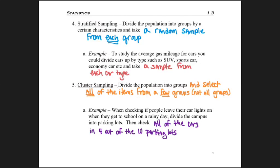What's nice here is you don't have to go to all ten parking lots, but hopefully you're still getting a pretty random sample. Whereas, if you had used cluster sampling to find gas mileage and just took all sports cars and all SUVs, it would give you the average gas mileage but just for those car types, which probably represent some of the worst gas mileage.